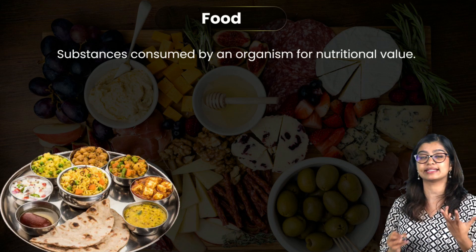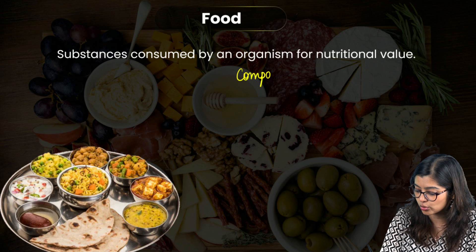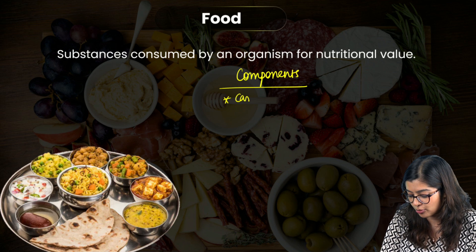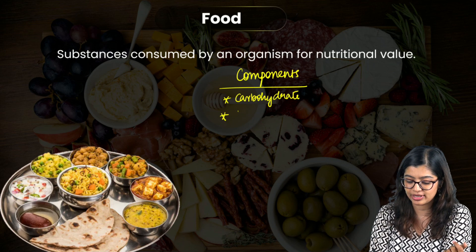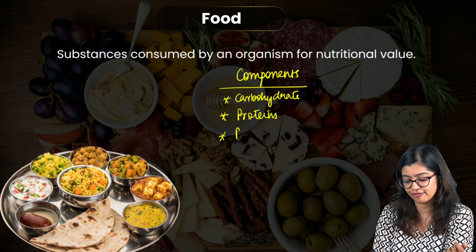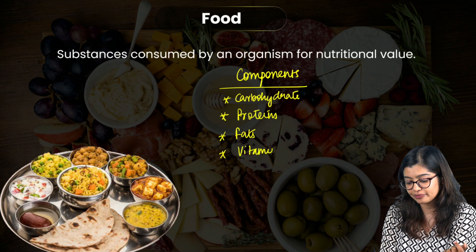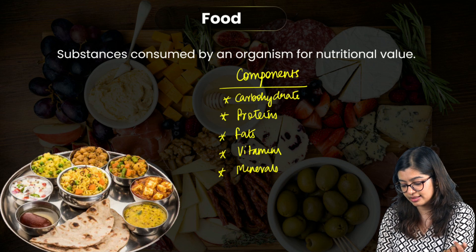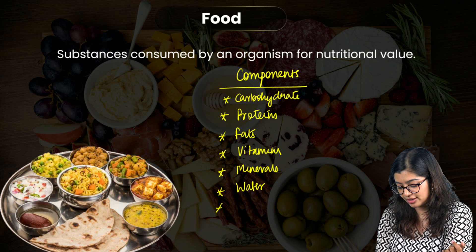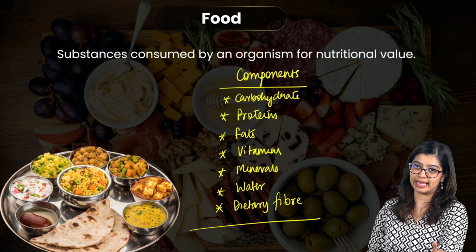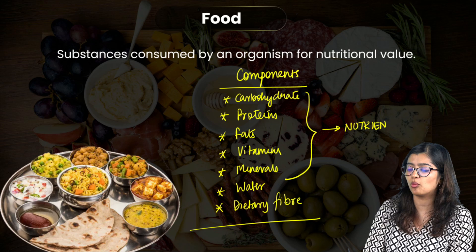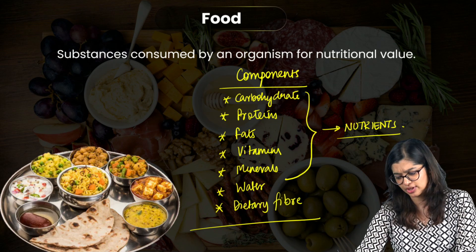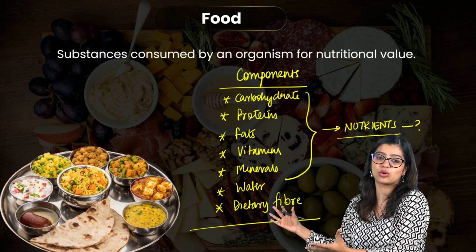Food is a substance we eat that has certain components which help us get energy, support growth and development, and enable repair. There are a total of seven components in food: carbohydrates, proteins, fats, vitamins, minerals, water, and dietary fiber. Of these, we call carbohydrates, proteins, fats, vitamins, and minerals as nutrients, but we do not call water and dietary fiber nutrients.